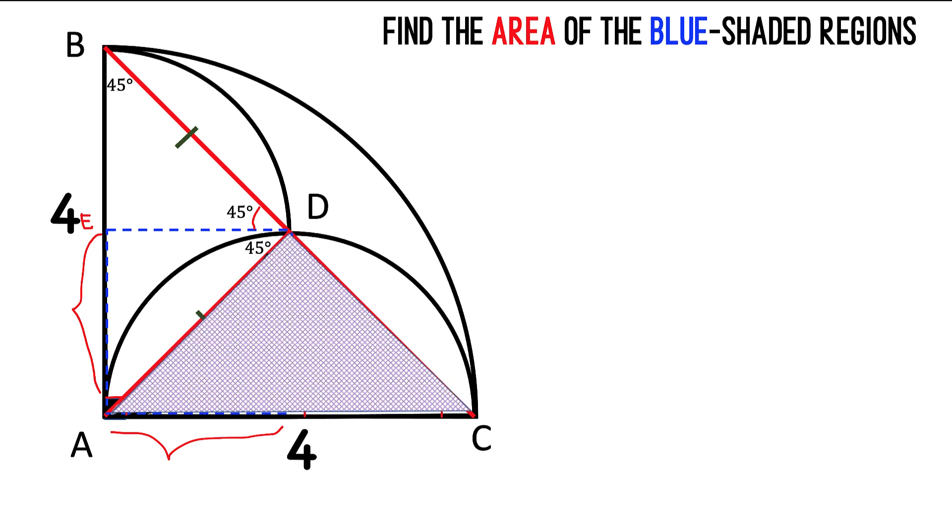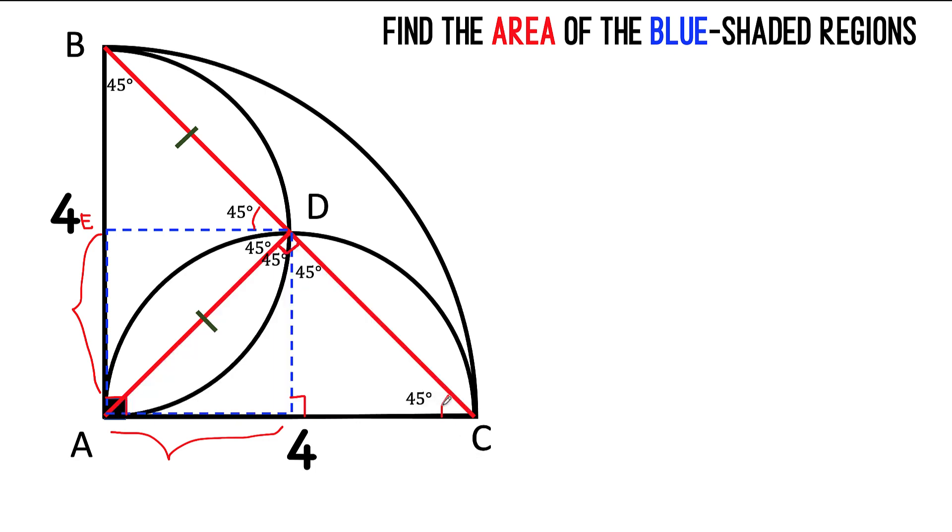In the same manner, considering triangle ADC, this is 45 degrees here, it's 90 degrees here, this must be 45 degrees here, so this side must be congruent to side DC.